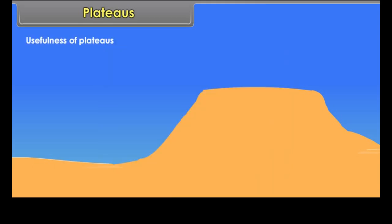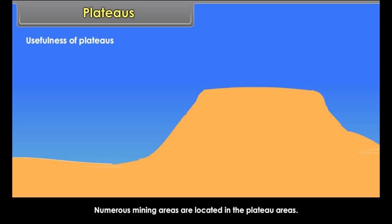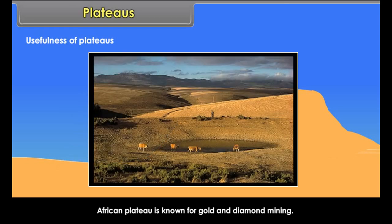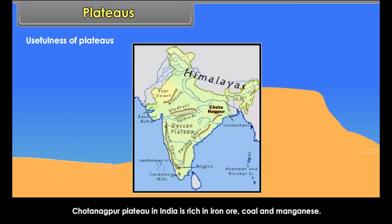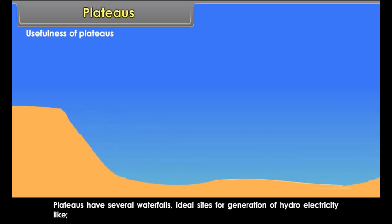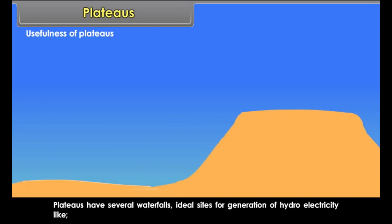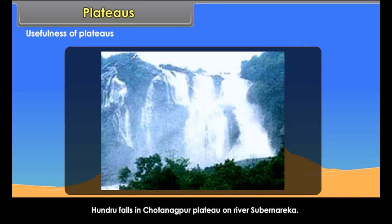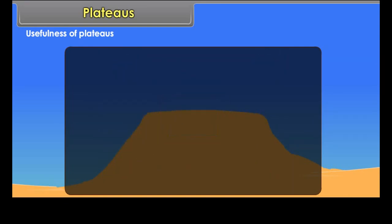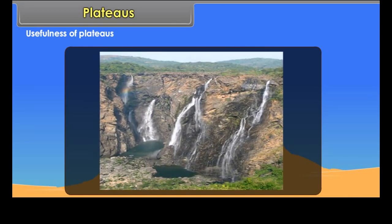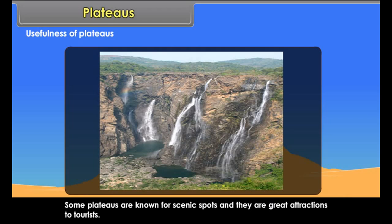Plateaus are rich in mineral resources and deposits, with numerous mining areas located in plateau regions. The African Plateau is known for gold and diamond mining, while the Chotanagpur Plateau in India is rich in iron ore, coal, and manganese. Plateaus also have several waterfalls, providing ideal sites for hydroelectricity generation, such as Hundru Falls on the River Subarnarekha. Lava plateaus with black soil are ideal for cultivation, and some plateaus are great tourist attractions.